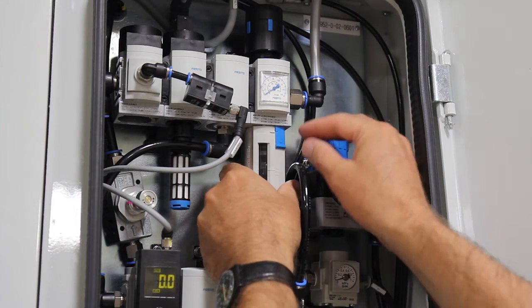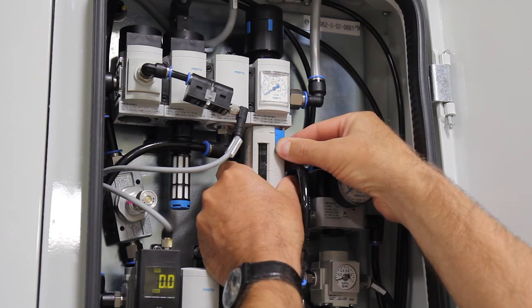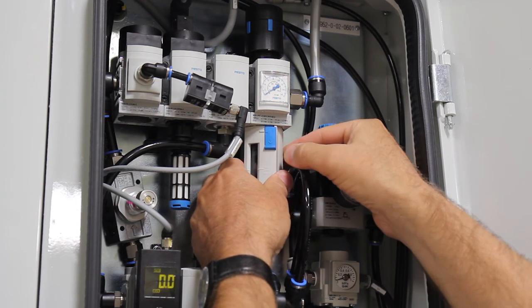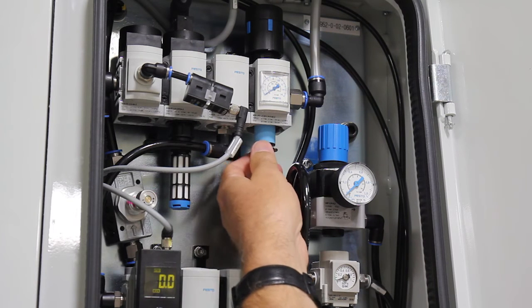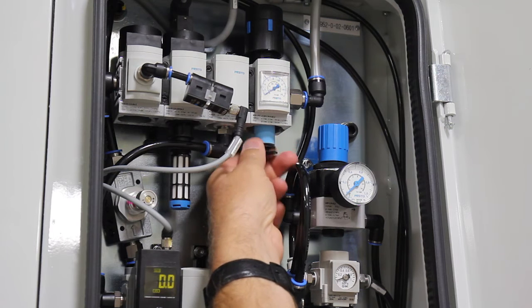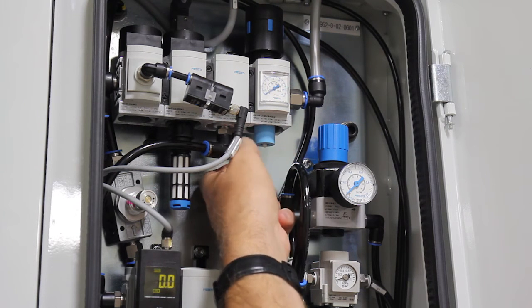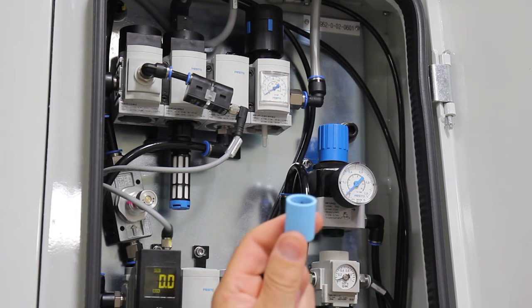To remove the bowl, simply locate the blue tab here, push it down and rotate clockwise and just remove. The replacement of the filter element is accomplished by unscrewing the retaining nut here and replacing the cartridge as required.